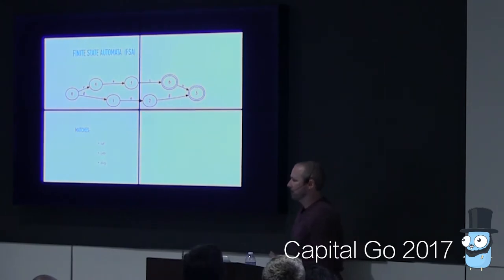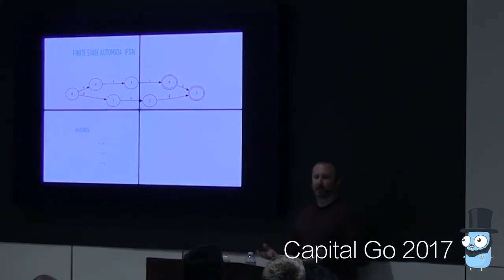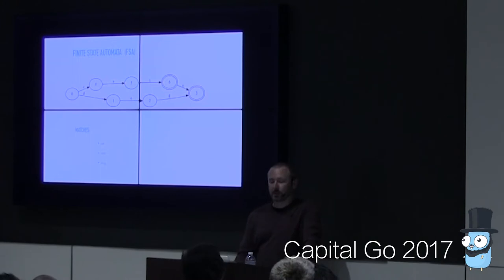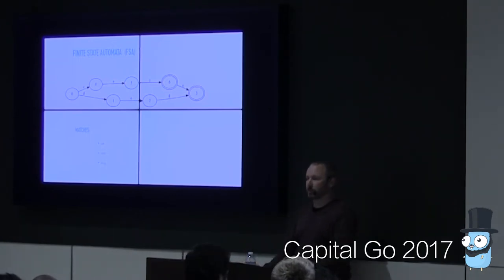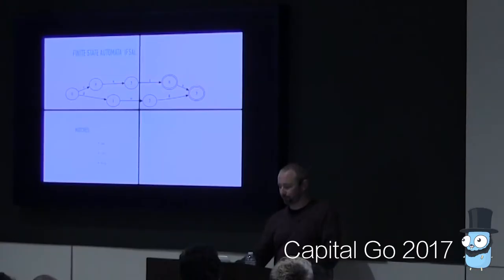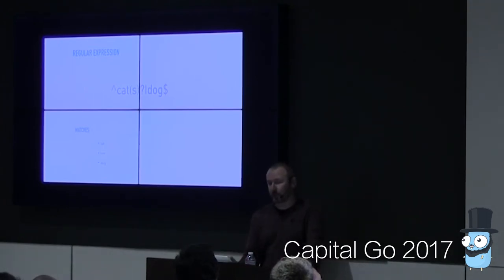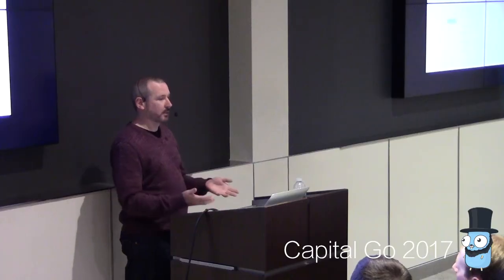Now we're going to talk about finite state automata. A finite state automaton is just another word for a finite state machine — I want to introduce that term because you'll see it in the literature. The difference here is that transitions are made by bytes coming in as input, so we can think of these as accepting or matching a particular input. The one we see here matches the strings 'cat', 'cats', and 'dog' — the final states are the ones with two circles, nodes 6 and 3. This looks like something you've worked with before: a regular expression. It turns out that regular expressions and finite state automata are equivalent.